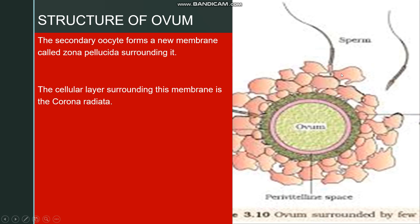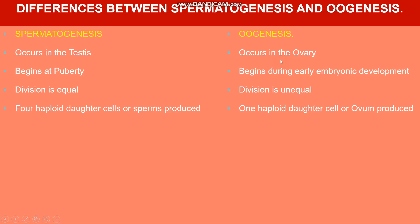The secondary oocyte is surrounded by a membrane called the zona pellucida. Surrounding that membrane are granulosa cells called the corona radiata. So the ovum consists of a membrane called the zona pellucida, and the cells surrounding it are called the corona radiata.